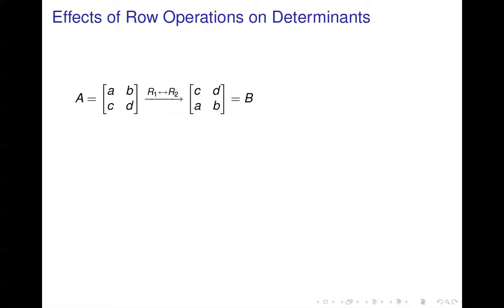So today we're going to talk about how row operations affect the determinant. Because if you do row operations, you need to know what effect that has on the determinant if you're going to use that approach to compute it.